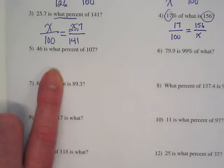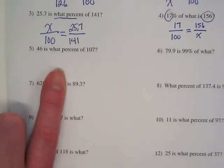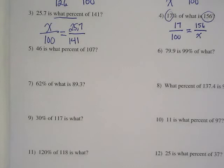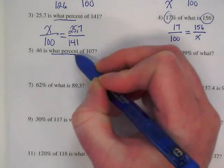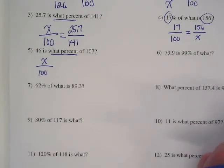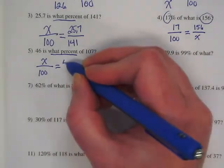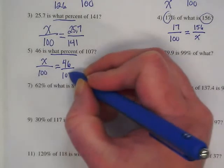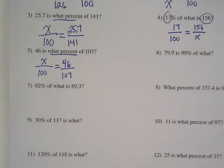Let's try number five. Try setting it up on your own. What's the question being asked here? The what percent tells us that my X is going to go with the 100. We don't know the percent, but we know it's something that is a percent. X over 100 is equal to 46 over 107. Do we feel a little bit better? Try number six.